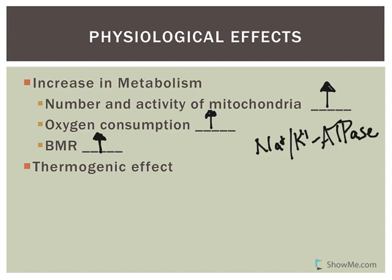Interestingly, thyroid hormones technically make you less efficient. When producing ATP, you use a certain amount of fuel but make less ATP than you normally should. You still need to produce ATP, so you need to break down more and more fuel to get energy. People who are hyperthyroid are always having to break down fuel, so they're going to be losing weight because they're constantly trying to make ATP. People who are hyperthyroid are also going to complain about being hot because thyroid hormones have a thermogenic effect.